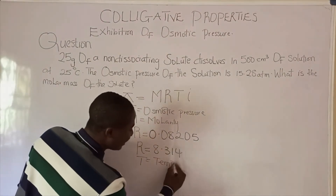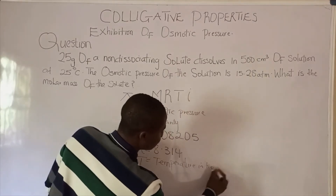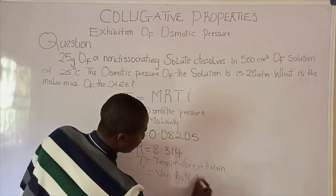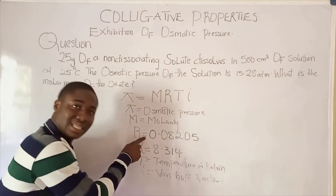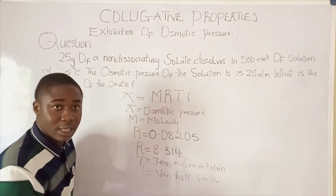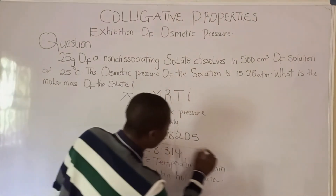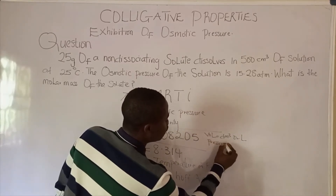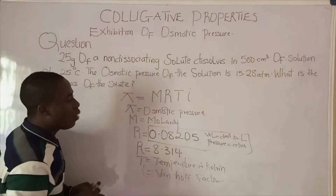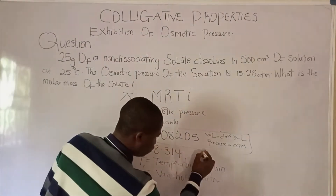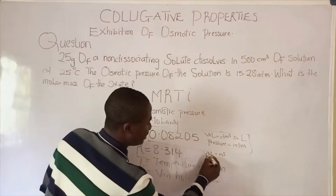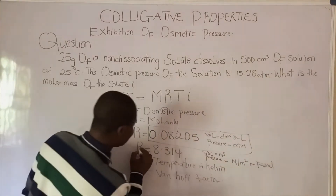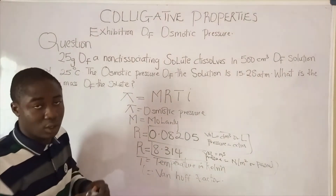T is Temperature in Kelvin, and i is called the Van't Hoff Factor. When do we use R = 0.08205? It is used whenever the volume is in dm³ or liters, and also whenever the pressure is in atmosphere. The value 8.314 is used when the pressure is in Newton per meter squared, or Pascal. These are the scenarios in which these two constants are used.